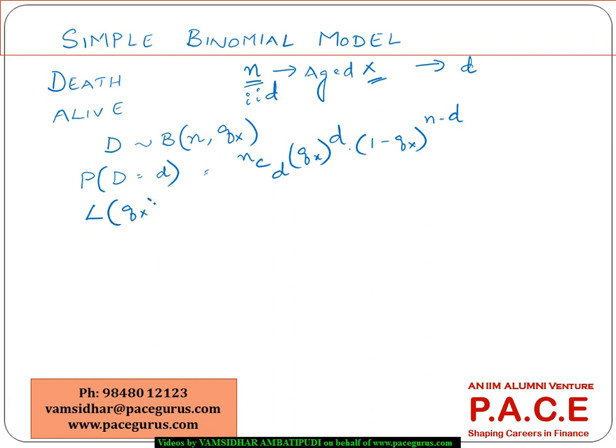So the likelihood function for qx - the probability density function is what will go as a likelihood function. So the likelihood function for qx becomes nCd qx^d times (1 - qx)^(n-d).